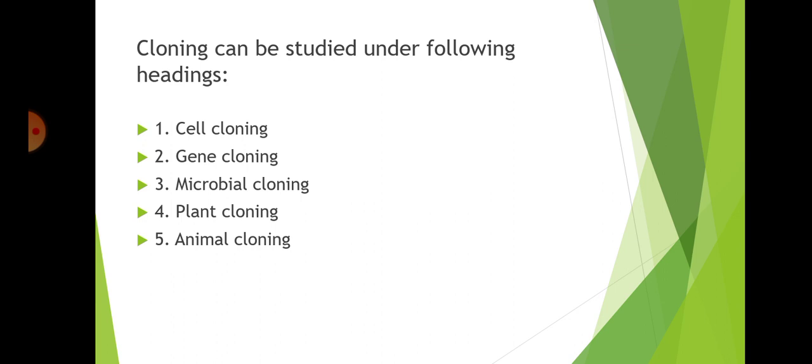Gene cloning refers to the production of a large population of a DNA fragment, formed by application of genetic engineering principles. Microbial cloning: microorganisms such as bacteria and mycoplasma are reproduced by asexual methods and can be duplicated very easily in culture medium in a very short time. Nowadays, a genetically altered microbial cell can produce thousands of identical offspring under in vitro conditions.